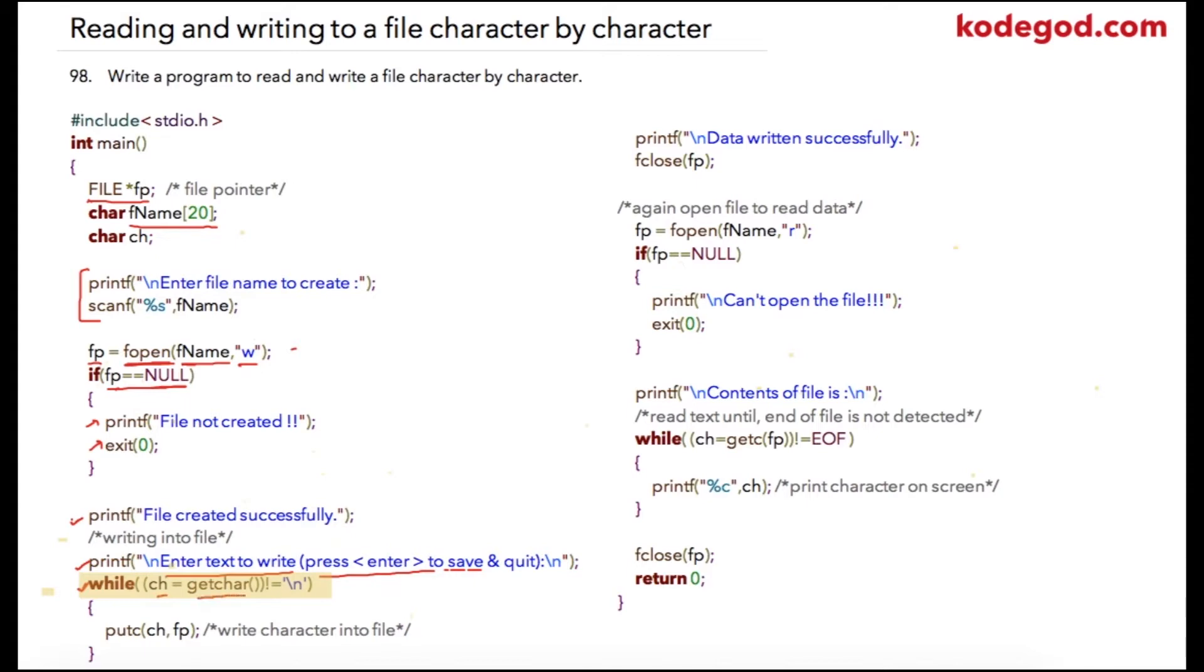So this is a condition over here but whatever user enters that will be first stored into ch and if ch is not slash n character then user can keep on printing the character. On each successful true condition we are going to use putc so we are going to enter character into the same file pointer.